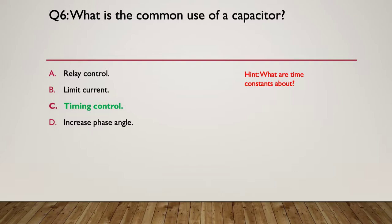Okay, so here's our answer. So, it's all about timing. Capacitors don't really have anything to do with relay control. Can they be used for current limit? Well, not actually by themselves. You've got to be used with some other components to do that. And increase of phase angle. Again, you'd need a lot of other components to be able to do that with a capacitor. So, timing control is the best answer there. C.